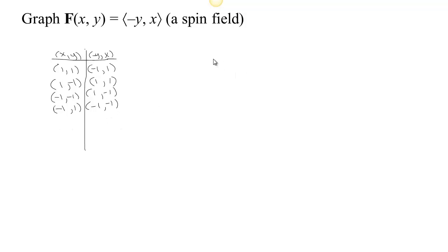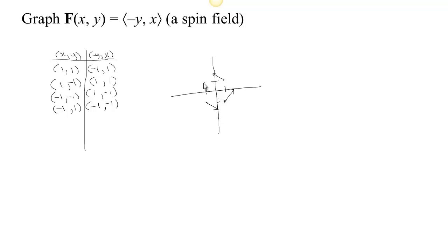We can see what's going on in this vector field. At (1, 1), we have a vector that goes back 1 and up 1. At (1, -1), we have a vector that goes forward 1 and up 1. At (-1, -1), we have a vector that goes forward 1 and down 1. At (-1, 1), we have a vector that goes back 1 and down 1. If you keep putting vectors in, you'll find the vectors tend to sort of spin around in a circle. This kind of field is a spin field.